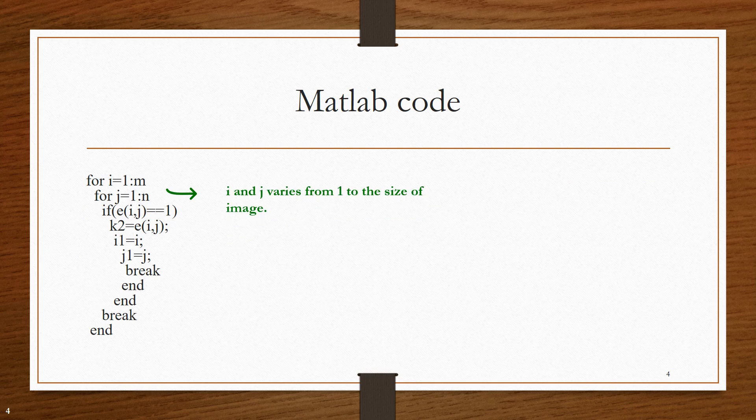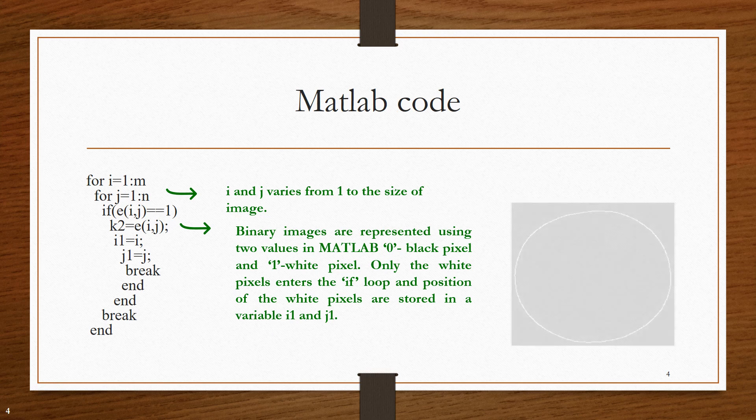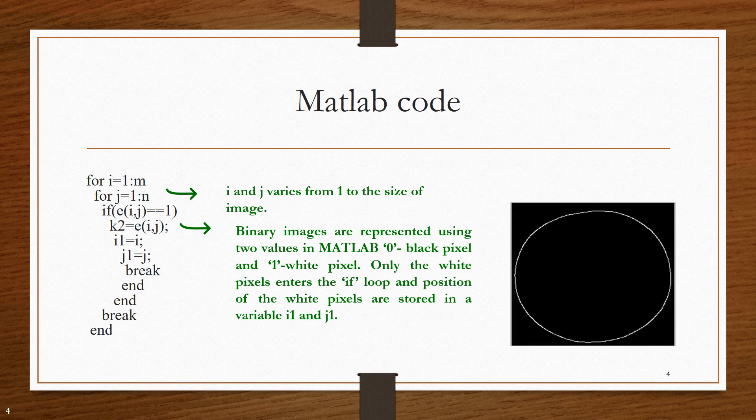Here, the variable i and j varies from 1 to the size of image. In MATLAB, binary images are represented using two values 0 and 1: 0 for black pixel and 1 for white pixel. In this if loop, the white pixels are being checked. If a pixel is white, then its location is being stored in the variable i1 and j1.